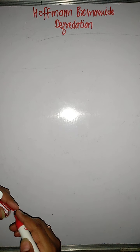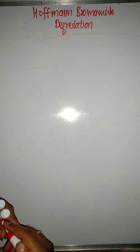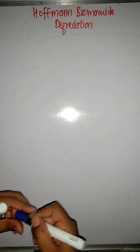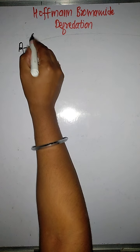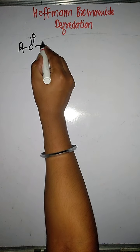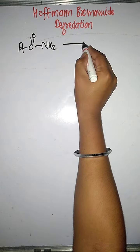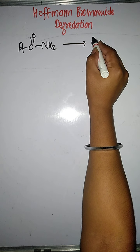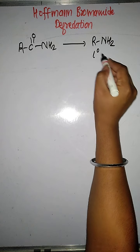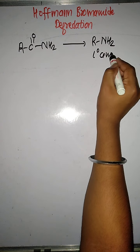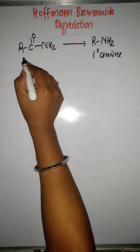Hello students. Today we will see the Hoffman Bromamide degradation. So what is Hoffman Bromamide degradation? It is the reaction in which primary amide changes into primary amine. It is called as Hoffman Bromamide degradation.